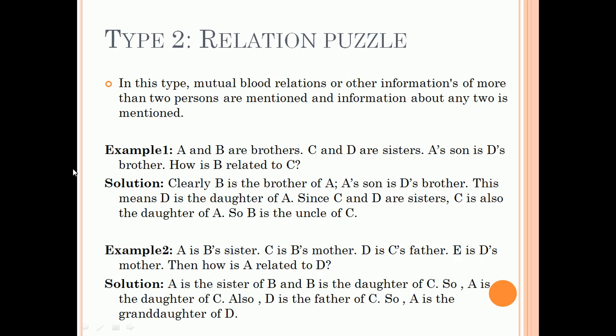Moving on to type two questions: relation puzzles. In this type, mutual blood relations or other information of more than two persons are mentioned, and information about any two is questioned. A and B are brothers, C and D are sisters. A's son is D's brother. How is B related to C?